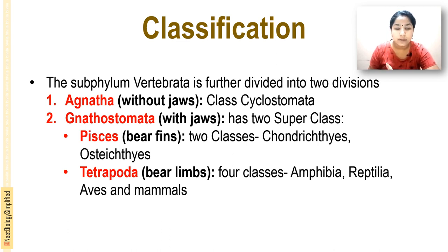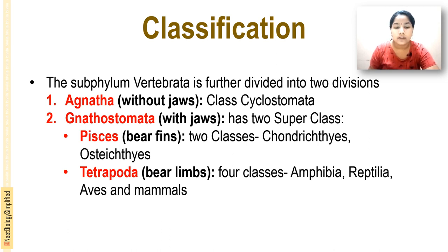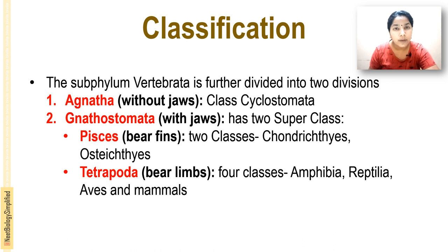Agnatha means animals without jaws, and they belong to class Cyclostomata. Gnathostomata means animals with jaws, and it is divided into two super classes: Pisces and Tetrapoda. Pisces have fins, while Tetrapoda have limbs. Pisces are divided into two classes: Chondrichthyes and Osteichthyes. Tetrapoda are divided into four classes: Amphibia, Reptilia, Aves, and Mammals.